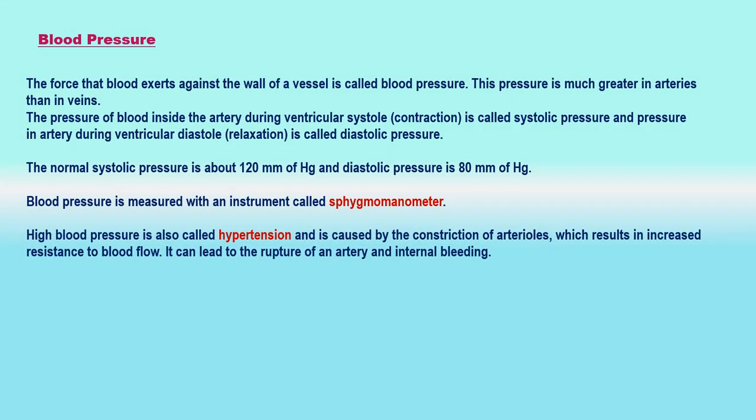Blood pressure: The pressure at which blood is pumped around the body by the heart is called blood pressure. The blood pressure of a person is always expressed in the form of two values called systolic pressure and diastolic pressure. The maximum pressure at which the blood leaves the heart through the main artery during the contraction phase is called systolic pressure. This high pressure maintains a steady flow of blood in all the arteries towards the capillaries. The minimum pressure in the arteries during the relaxation phase of the heart is called diastolic pressure, and its value is always lower than that of the systolic pressure.